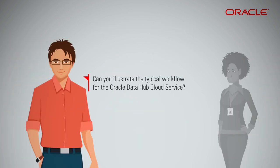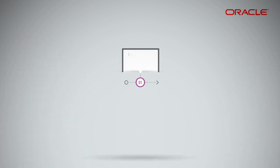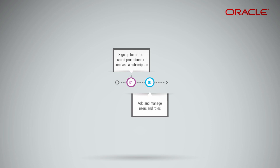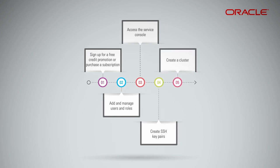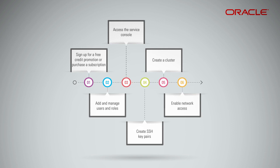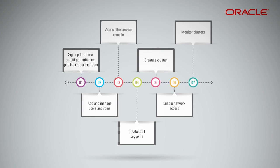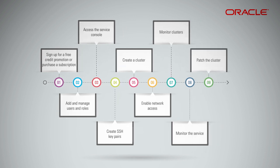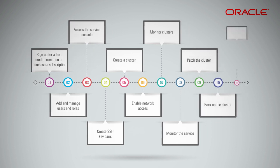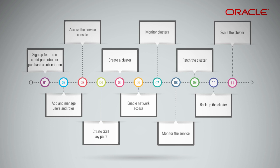Can you illustrate the typical workflow for the Oracle Data Hub Cloud Service? Sign up for a free credit promotion or purchase a subscription. Add and manage users and roles and assign them appropriate privileges. Access the service console. Create an SSH key pair to facilitate secure access to all VMs in your service. Create a quick-start cluster based on a standard template or a custom cluster that meets your precise requirements. Enable network access to services associated with your clusters. Monitor clusters to check on health and performance. Monitor the service for day-to-day operations and review important notifications. Patch the cluster or roll back a patch. Back up the cluster on demand or schedule automated backups. Scale the cluster by adding or removing nodes in preparation for increased or reduced load.